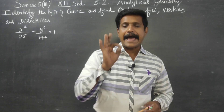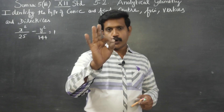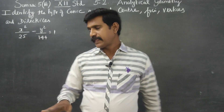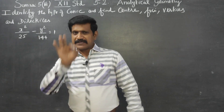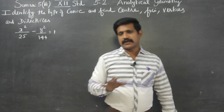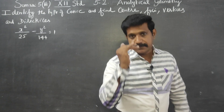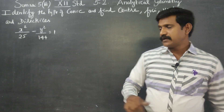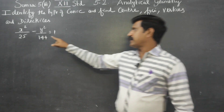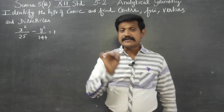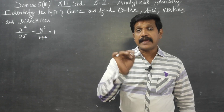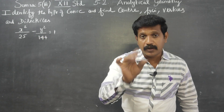When the middle symbol is a minus symbol, it is a hyperbola. When the middle symbol is a plus symbol, it is an ellipse. When the middle symbol is minus, it is a hyperbola.